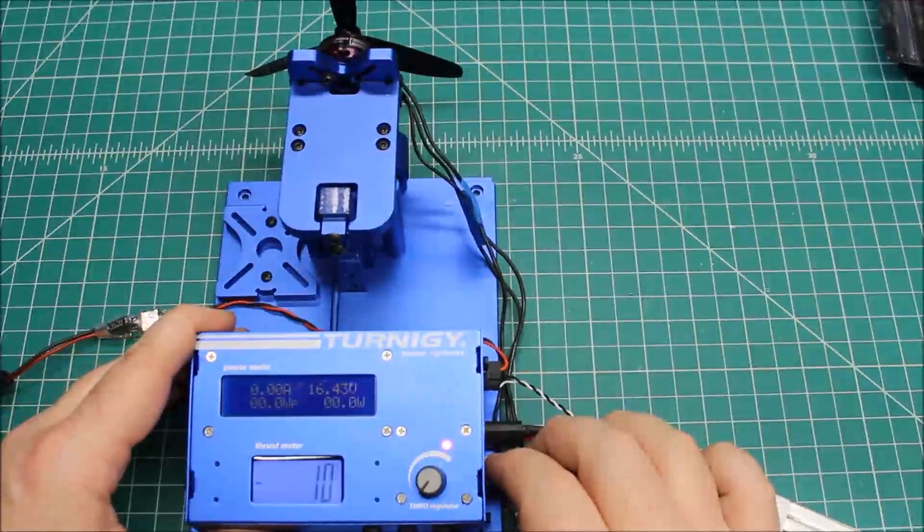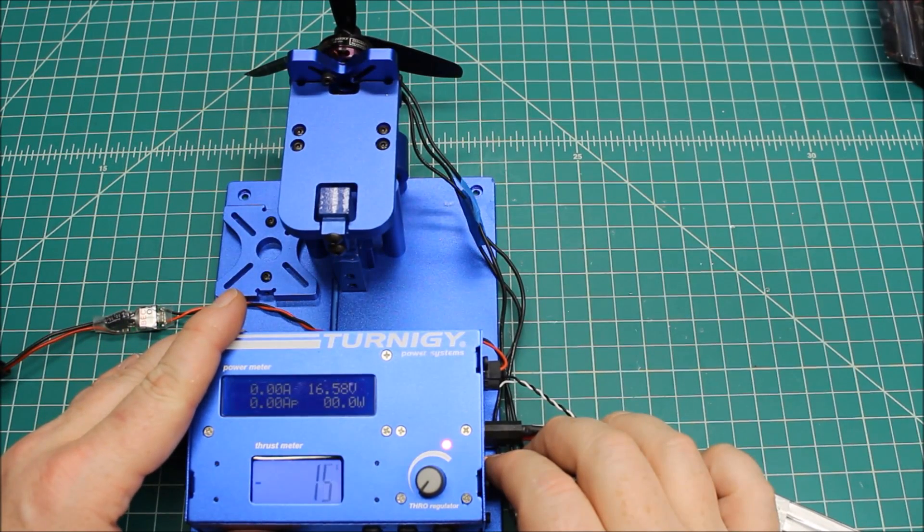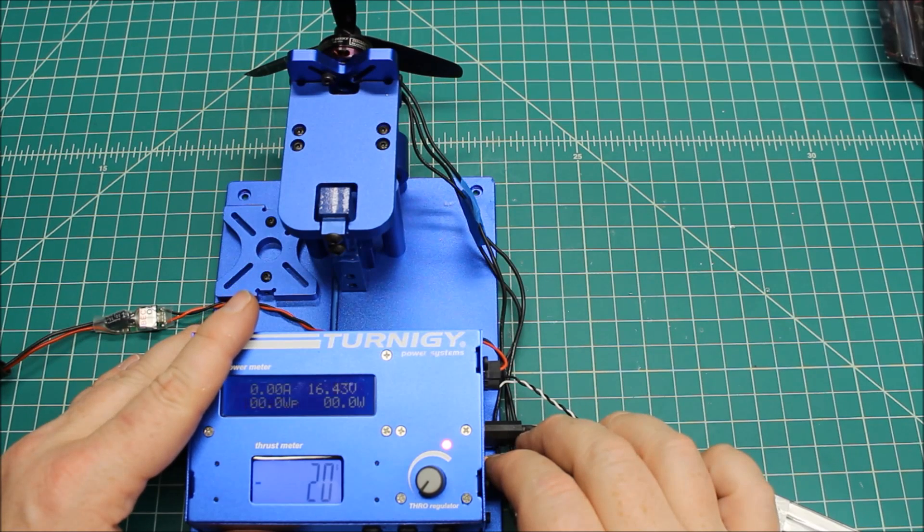These are the Lumineer Schizo 2205 2400 kV motors with the ceramic bearings. This is with a Dowel 50-45 tri-prop.